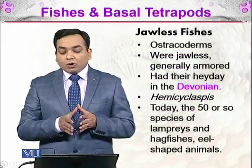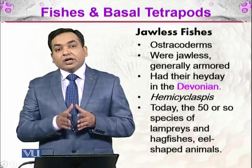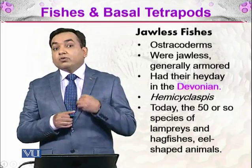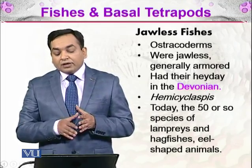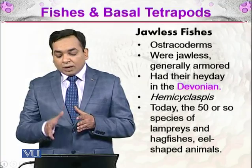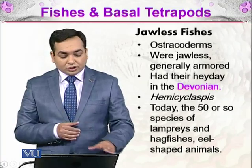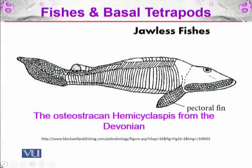The jawless fishes were the ostracoderms — jawless, generally armored, and they had their heyday in the Devonian period, meaning they flourished at that time. One example is Hemicyclaspis. Today there are about 50 or so species of lamprey, hagfish, and eel-shaped animals that are related to these ancient fishes. You can see the ostracoderm Hemicyclaspis from the Devonian period — these are organisms lacking the jaw, though they had some structure from which they could eat.